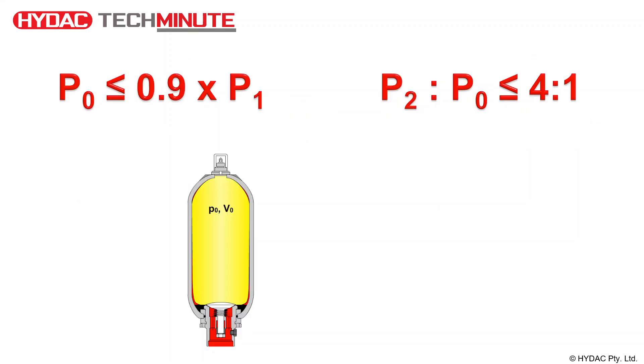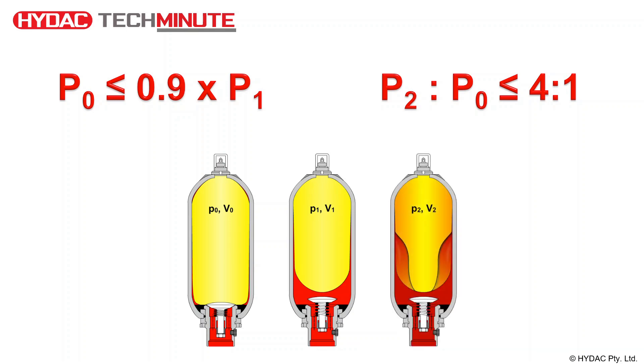Here we are demonstrating the calculations for a hydraulic energy storage application with a bladder type accumulator. The equation on the left tells us that the pre-charge pressure should be 90% or less than the minimum system pressure, P1. The equation on the right tells us that the maximum permitted pressure, P2, cannot be greater than 4 times the pre-charge pressure. This is also known as the pressure ratio.